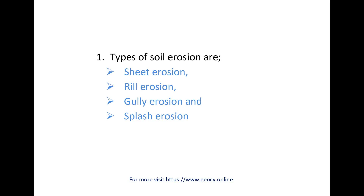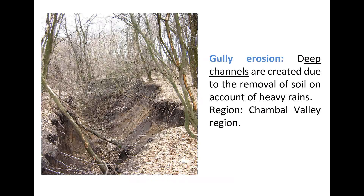There are four different types of soil erosion: sheet erosion, rill erosion, gully erosion, and splash erosion. In gully erosion, deep channels are created due to the removal of soil on account of heavy rains.